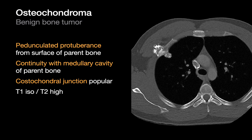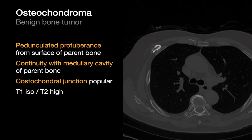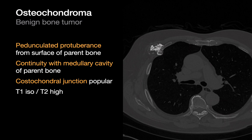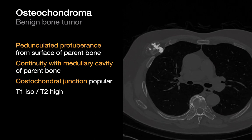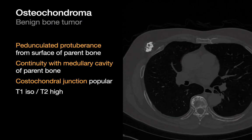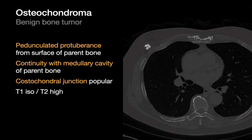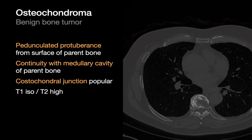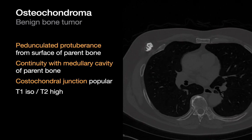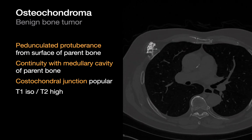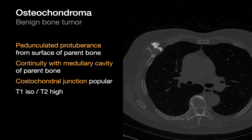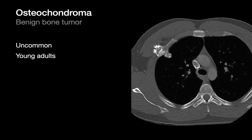Osteochondromas are a benign bone tumor seen from time to time in the chest wall. They appear as a pedunculated bony growth from the surface of a rib that shares a continuous marrow with the rib. They're also much less common than fibrous dysplasia.